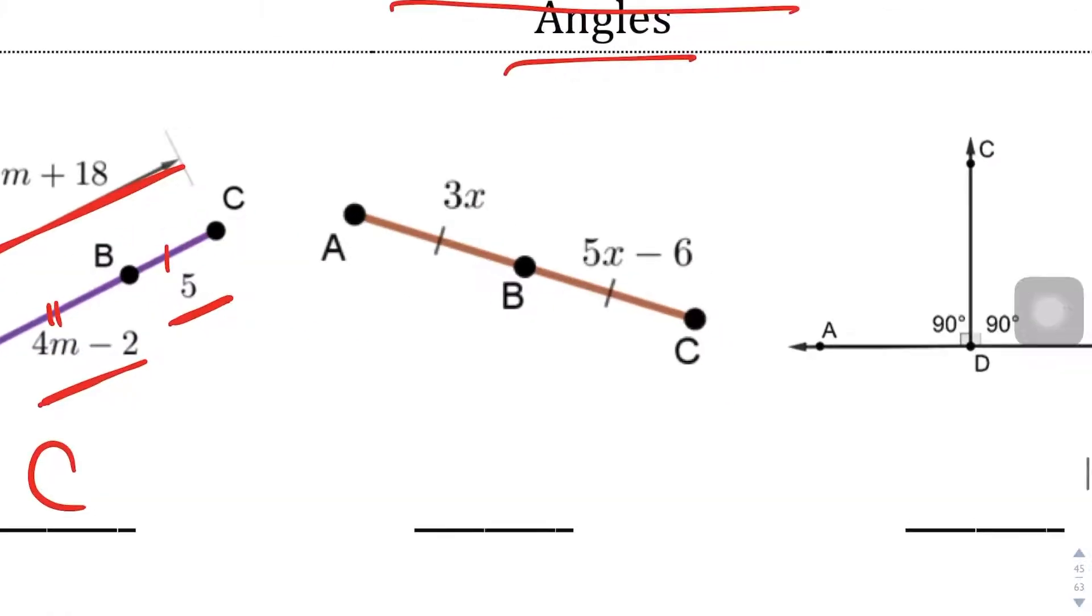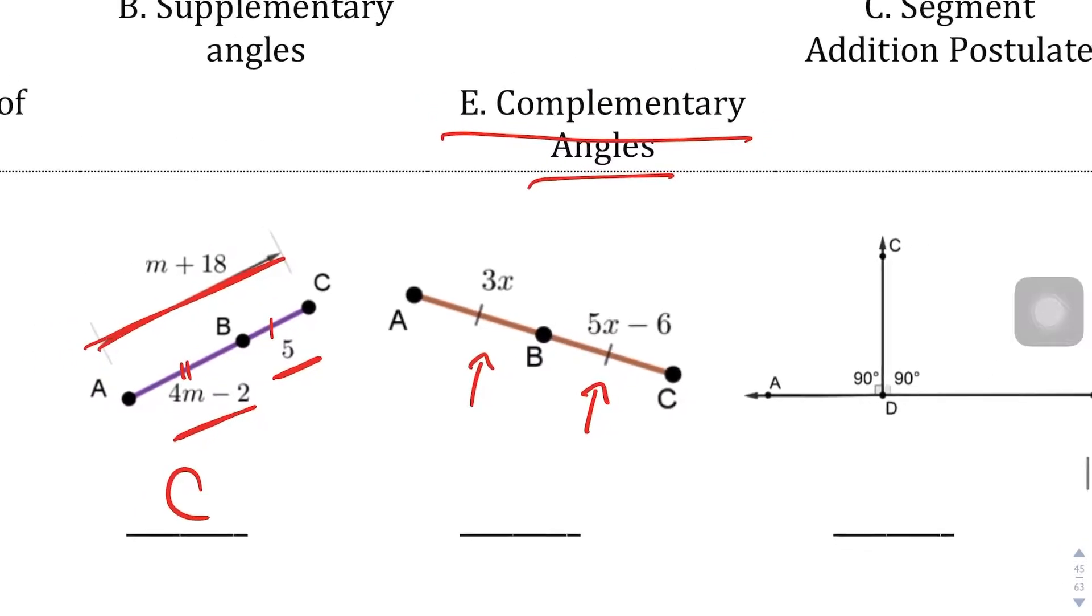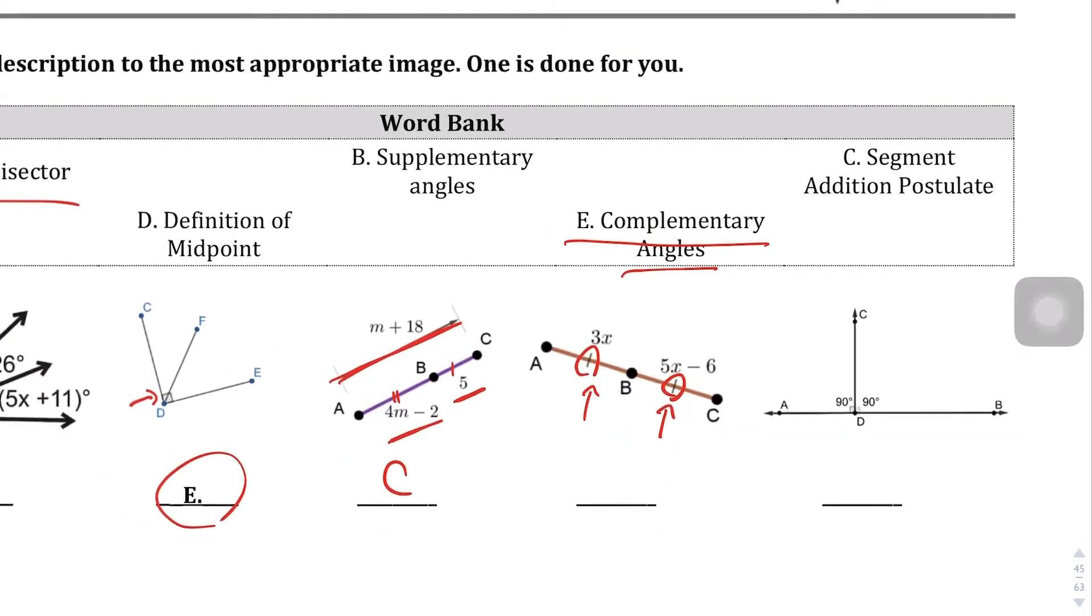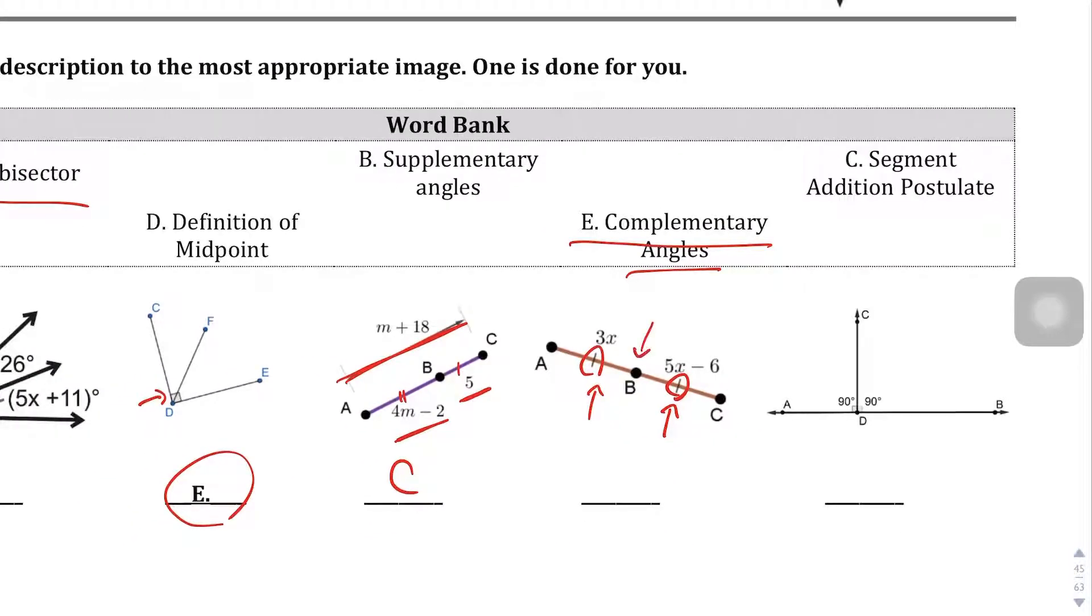Don't get that confused with the next one, because yes, you do have a segment and a segment that's going to be added to create the bigger segment AC, but we are told the big hint here is that that hash mark tells us that those are equal pieces. What that means is this point B is going to be the middle of that segment AC, so this is the definition of a midpoint.